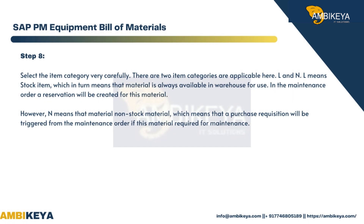Step 8 — Select the item category very carefully. There are two item categories applicable here: L and N. L means stock item, which means that the material is always available in the warehouse for use. In the maintenance order, a reservation will be created for this material.